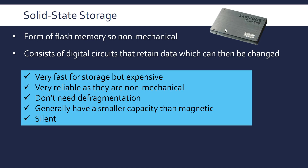SSDs are a lot faster — read times are much faster than hard drives — but per unit capacity they are a lot more expensive. For example, a 128 GB SSD might cost the same as a 1 TB hard drive. They are quite reliable compared to other types because they are non-mechanical, so there's less that can go wrong. They also don't require defragmentation — where data gets shuffled around to improve efficiency — unlike hard drives. SSDs often have a much smaller capacity than magnetic hard disks because they're more expensive. They are silent and don't produce much heat, which is another advantage.